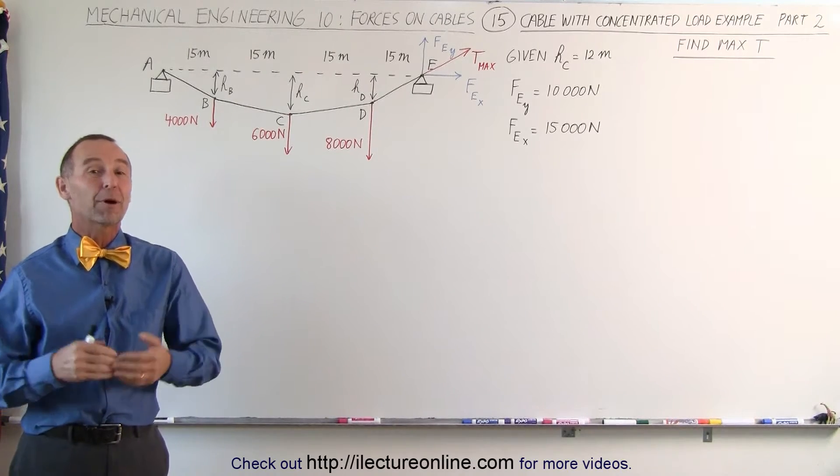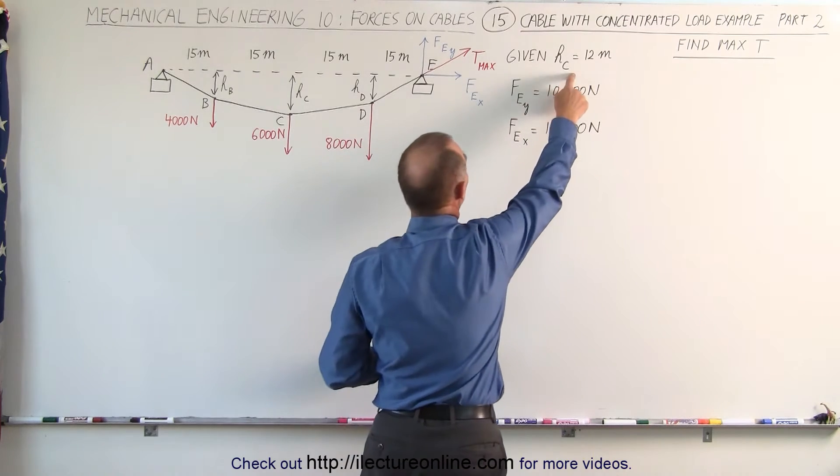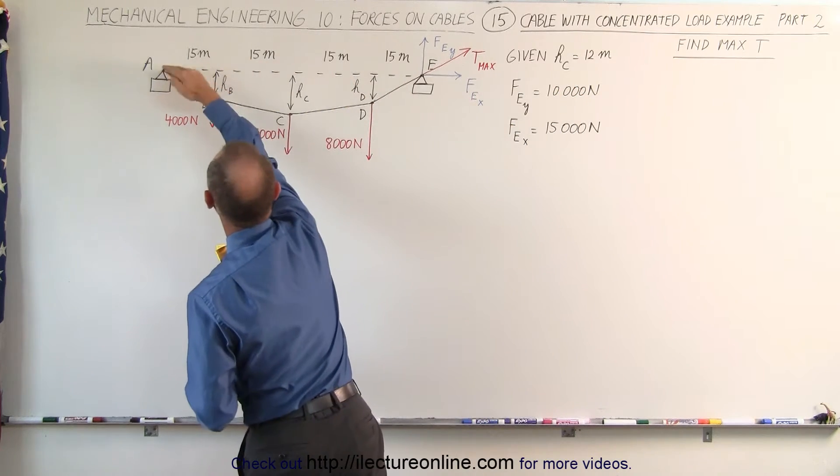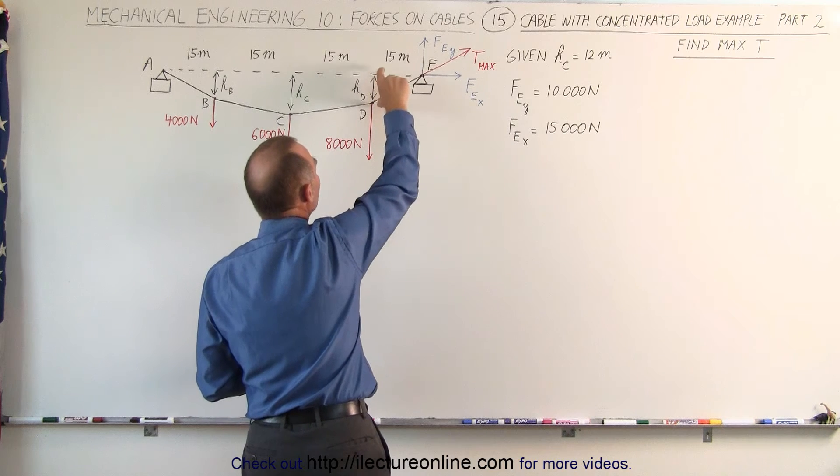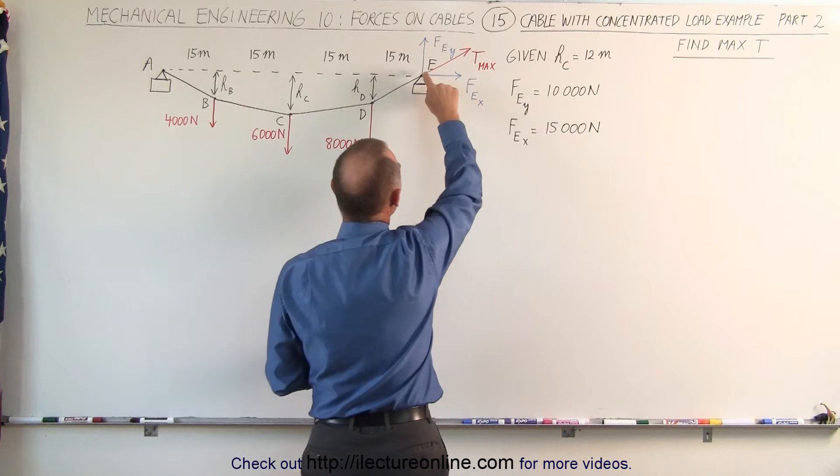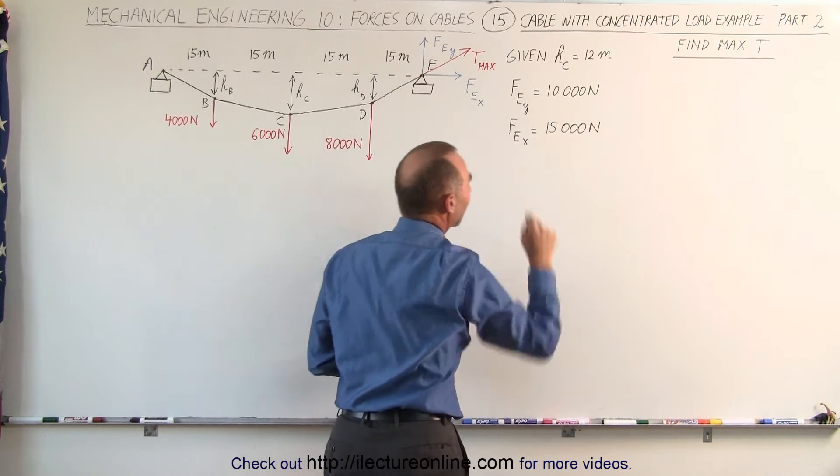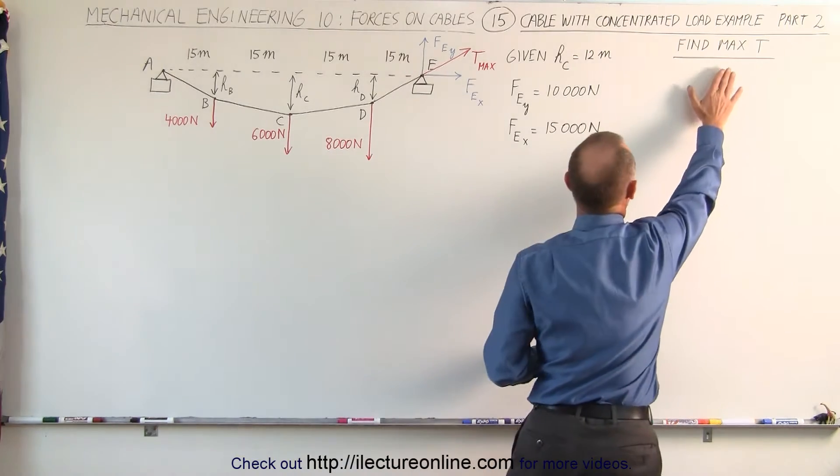Welcome to Electron Line. Now for part 2 we're going to assume still that we know the distance, the vertical distance from the horizontal line connecting A and B to the lowest point C. We do not know H sub D. We do know the force at the end point right here at E in the Y direction and at the X direction and we're trying to find the maximum value for T.